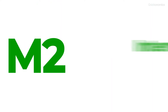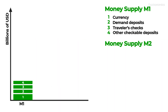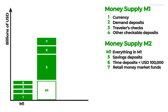Next up is M2, the intermediate measure. M2 includes everything in M1 as well as savings deposits, time deposits below $100,000 US dollars and retail money market funds. It is often referred to as the intermediate measure because it is broader and therefore slightly less liquid than M1, but not quite as broad as M3.